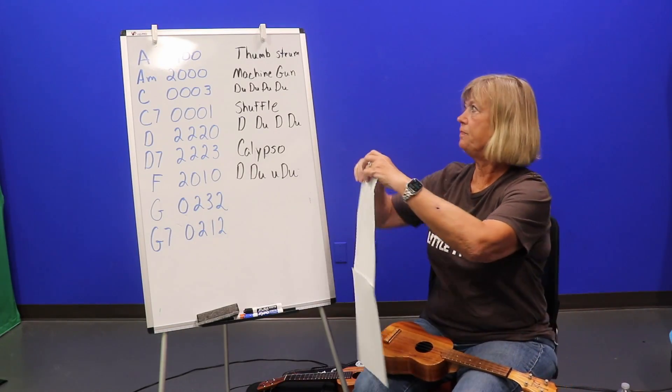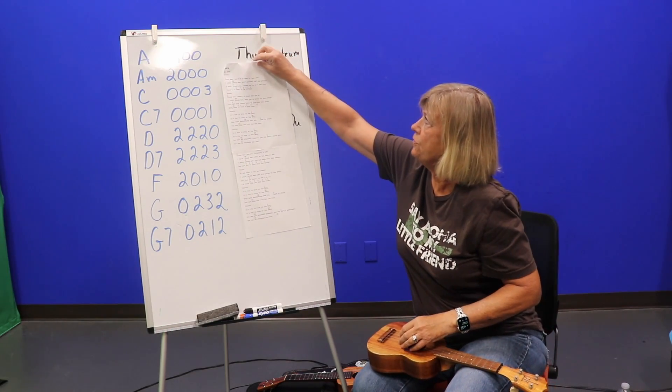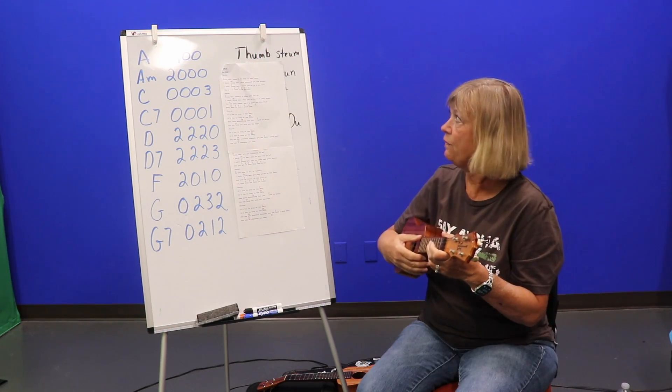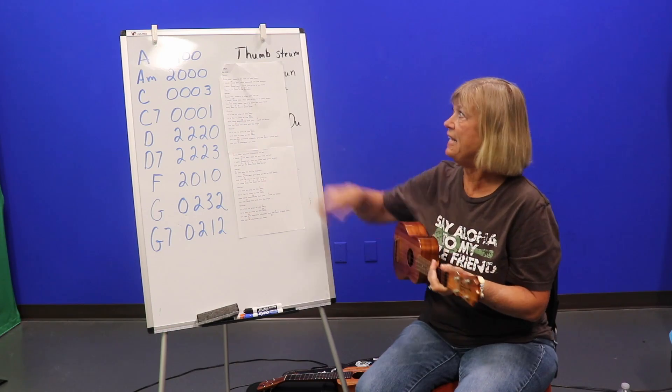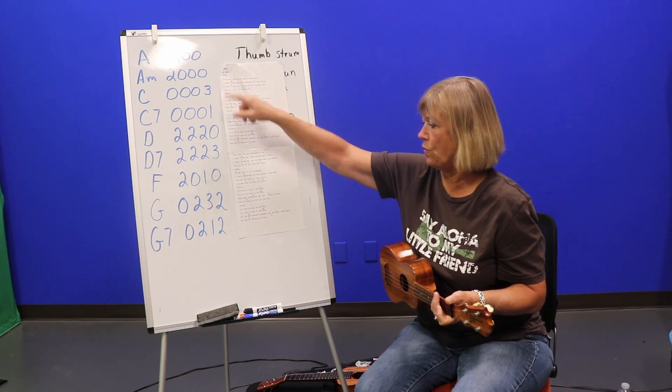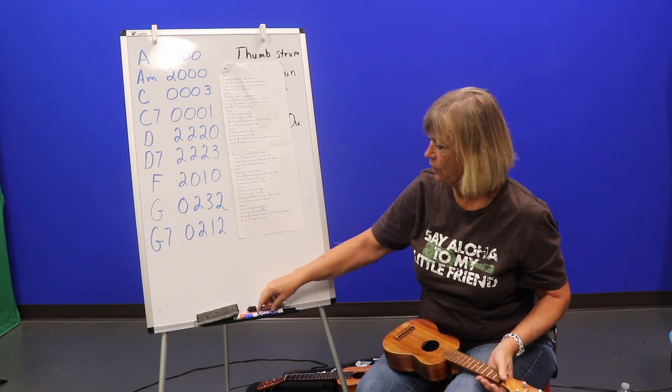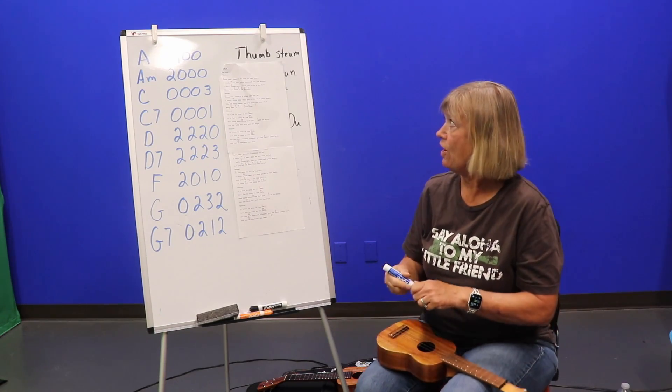And for YMCA, we're going to use a machine gun strum. We've got a new chord here, and that is the D minor chord. And it's only used a little bit in this song.